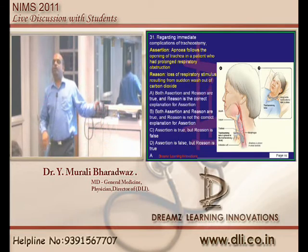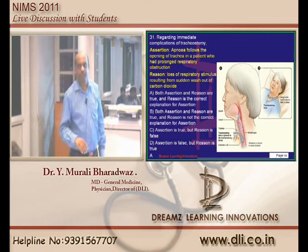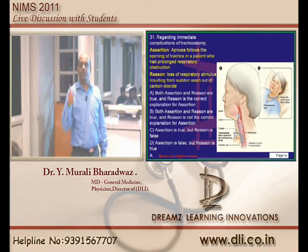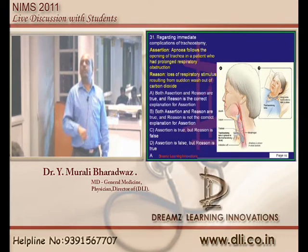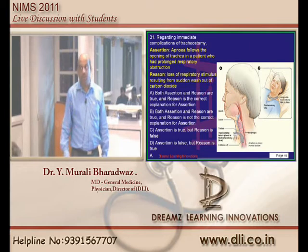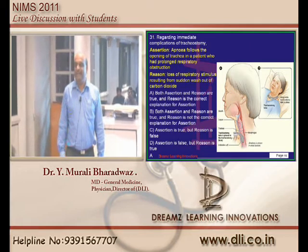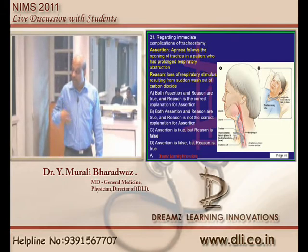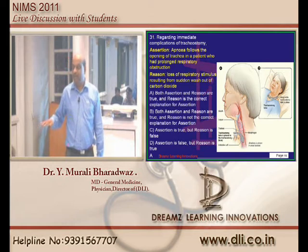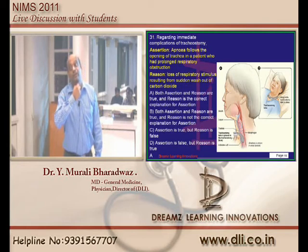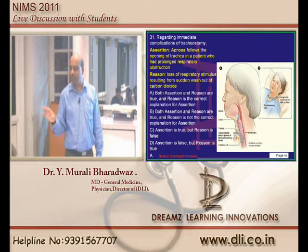What do you mean by type 1 and type 2 respiratory failure? High pCO2 with a low pO2 is called type 2, and normal pCO2 with a low pO2 is called type 1. If there is pulmonary edema you get type 1, because in pulmonary edema it is fluid - carbon dioxide can diffuse 40 times more easily but oxygen cannot. So hypoxia with normal capnia occurs, whereas in severe bronchospasm in late-stage asthma, neither oxygen can come in nor CO2 can go out, hence it is type 2.